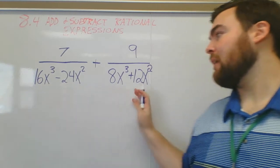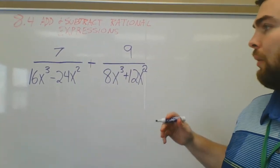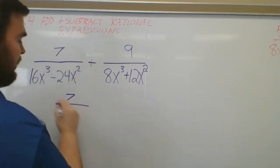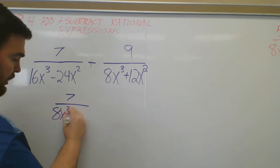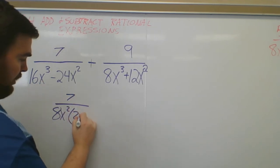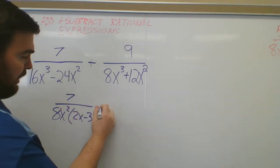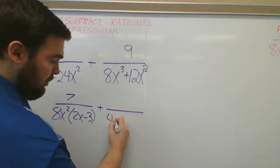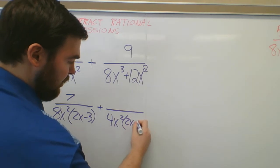Now factor the denominator — the numerators are just numbers so we're fine there. I'm going to factor out an 8x squared, and I'll be left over with 2x minus 3. Over here, I'll factor out a 4x squared and I'll be left with 2x plus 3.